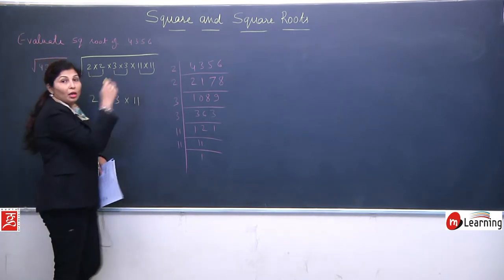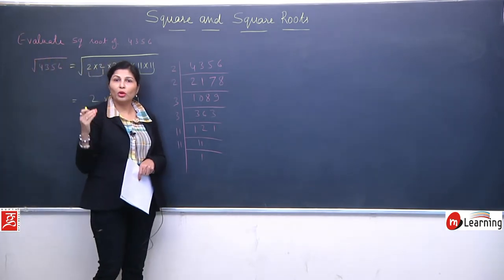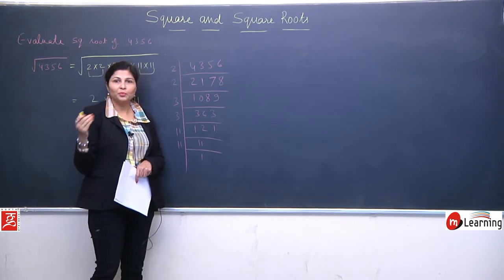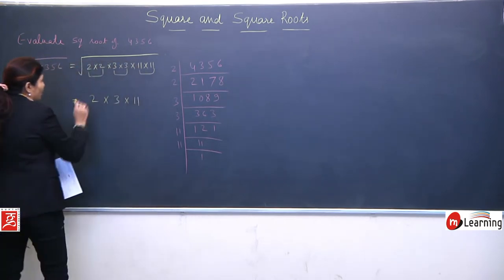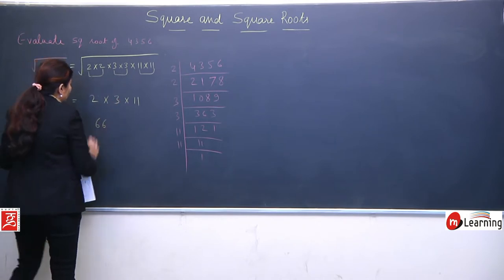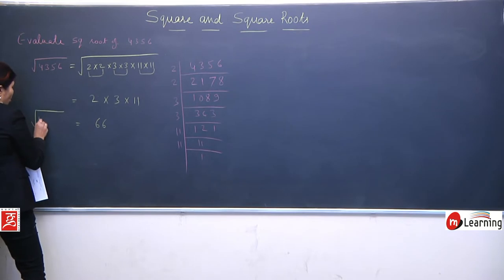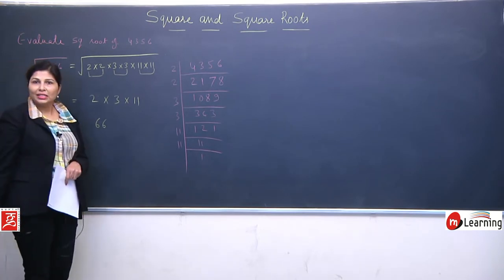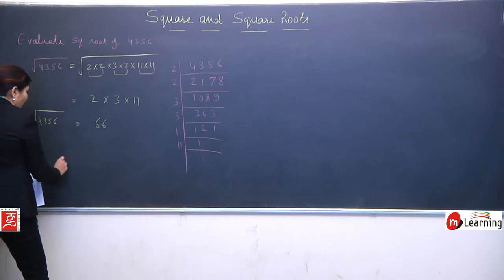I'm not explaining the procedure behind this because I have taken so many examples, so we're assuming you know this. Now 2 times 3 is 6, times 11 is 66. So the square root of 4356 is 66.